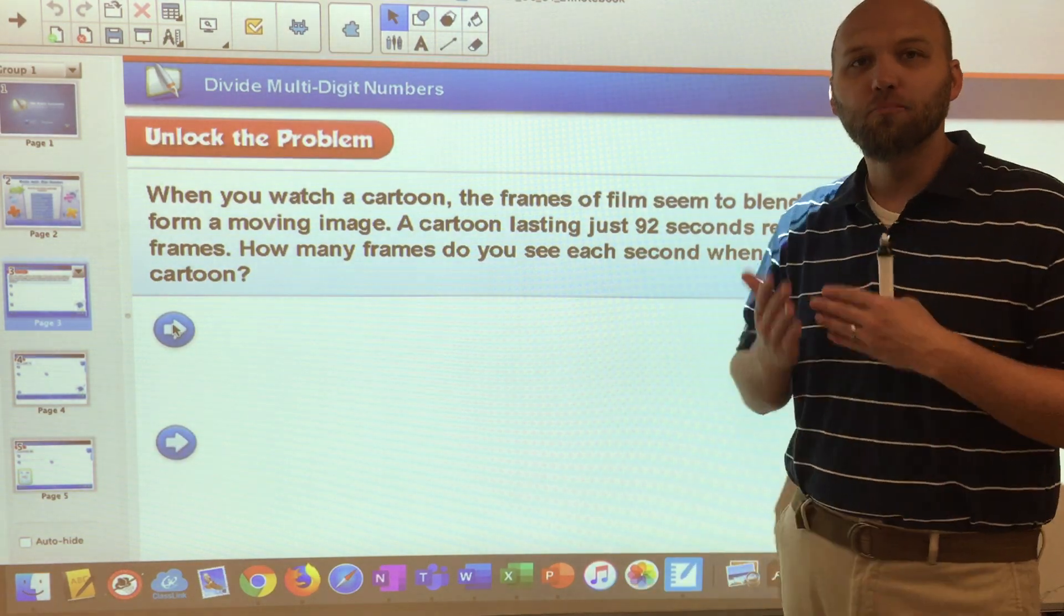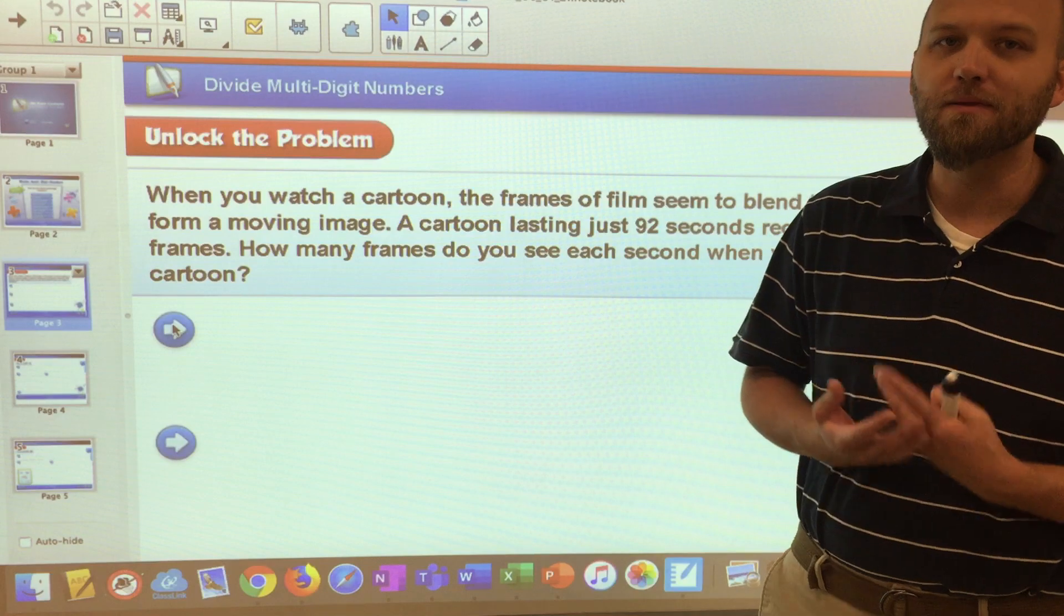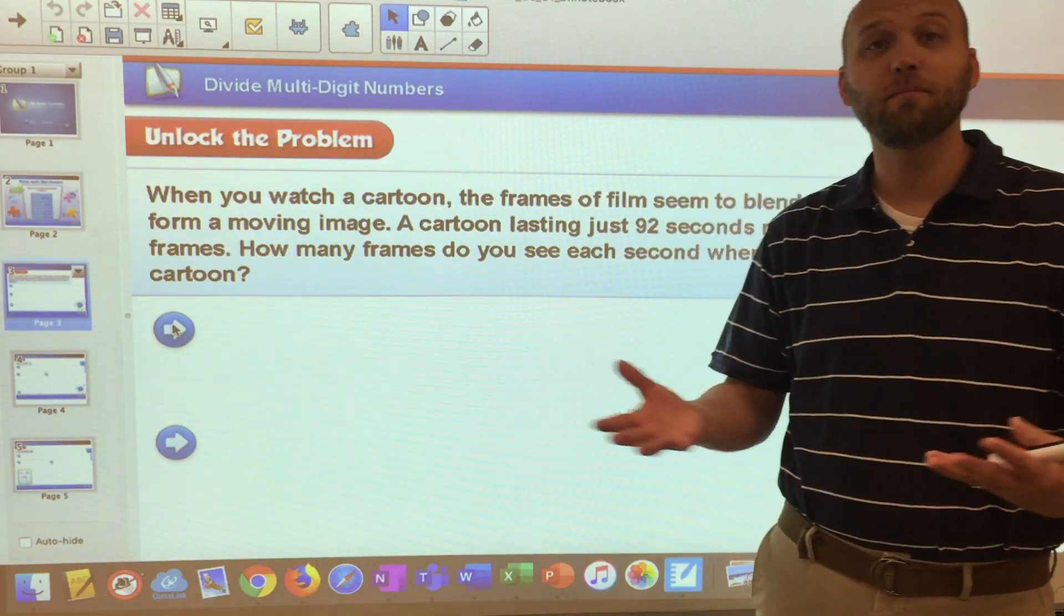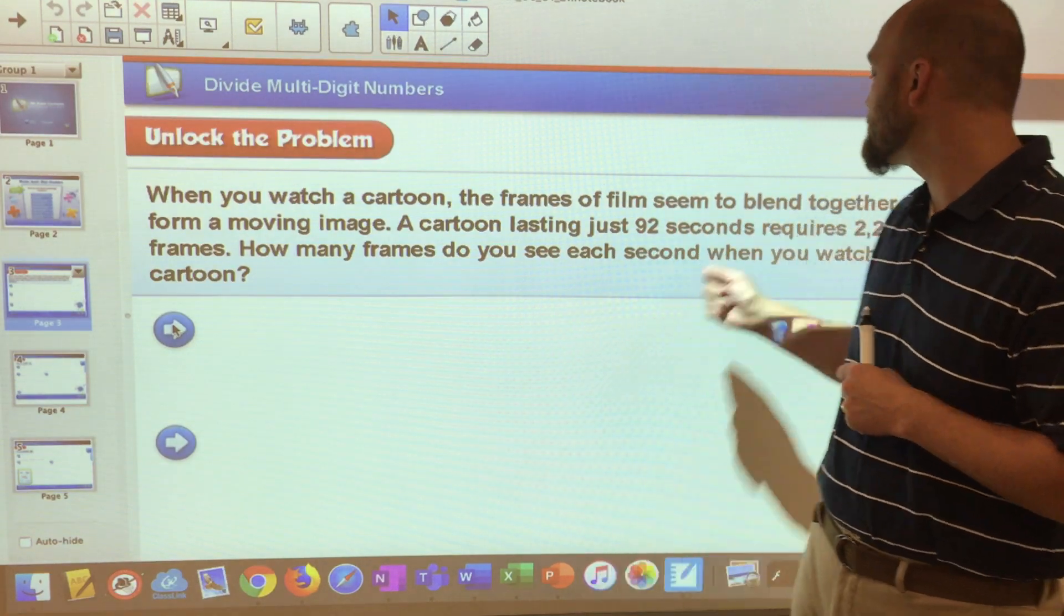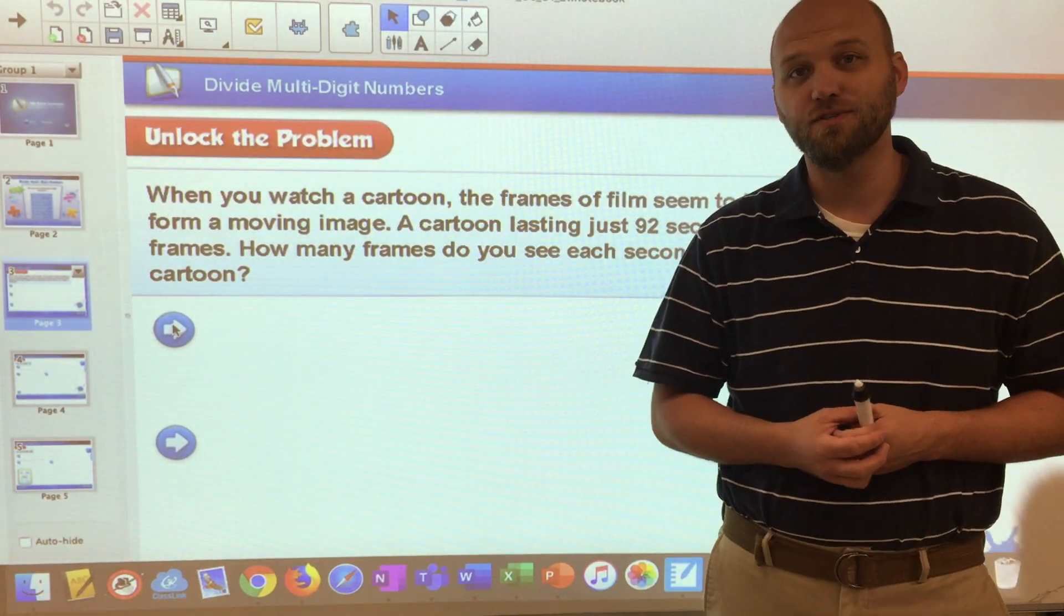When you see how many per, that's usually a division problem. That means we're going to take some number, we're going to break it up into even pieces. In this case, we're taking the 2,208 and breaking it up into 92.